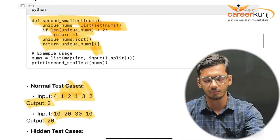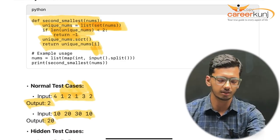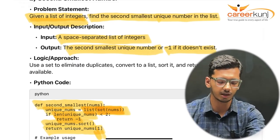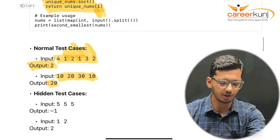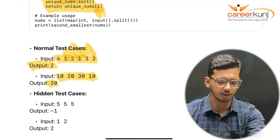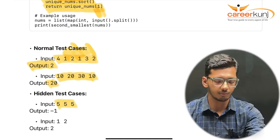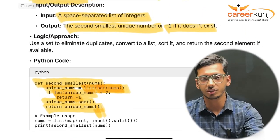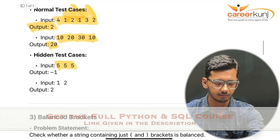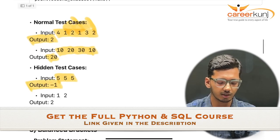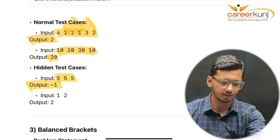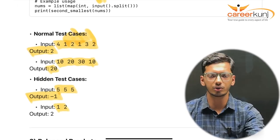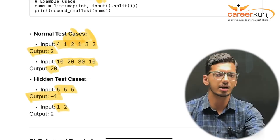For hidden test cases: if I pass three identical values like [5, 5, 5], there is no second smallest unique number, so the output is minus one. If I pass [1, 2], the output is 2. You can also test with 0 or negative numbers — the code will still give the expected result.